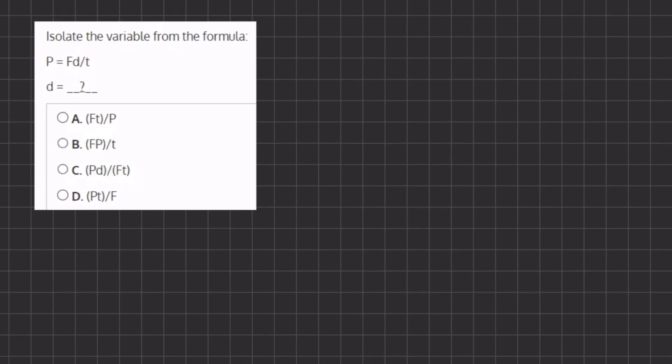All right, so in this problem we want to isolate the variable d from our formula. Before we do so, we are going to rewrite our formula: p equals f times d all over t.